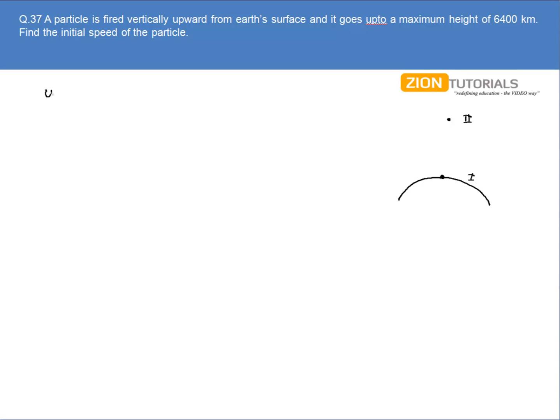Calculating the initial potential energy, that is minus GMm by R. The final potential energy will be minus GMm by 2R, because the radius of Earth is 6400 km and it reaches a maximum height of R from the surface. So from the center the distance will be 2R.